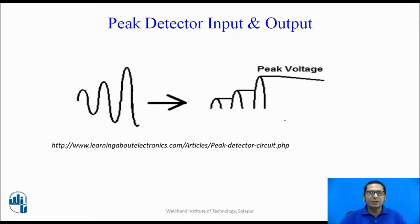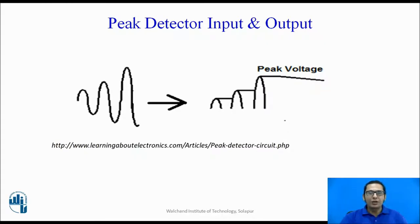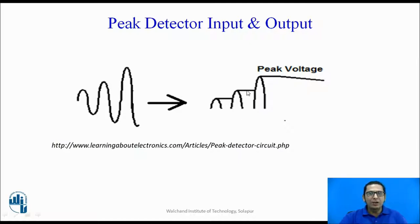As the name suggests, a peak detector is a circuit to which we apply an AC, sinusoidal, or any other signal, and the output is a DC signal which always represents the peak value of the input signal. When the input rises to a peak, the output attains that peak value and remains constant even when the input goes low. The output always represents the peak value of the input signal.